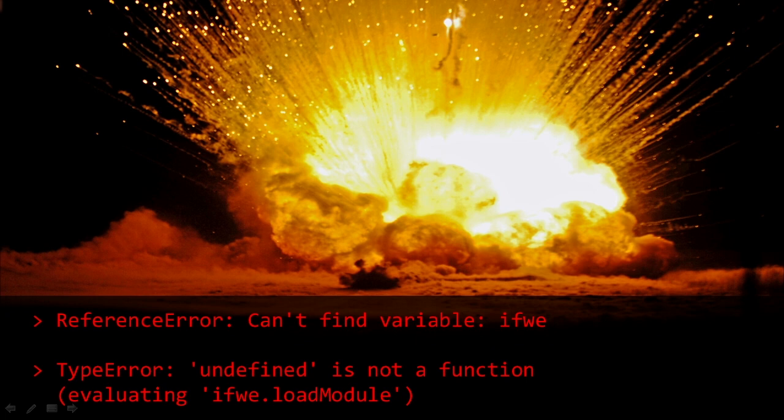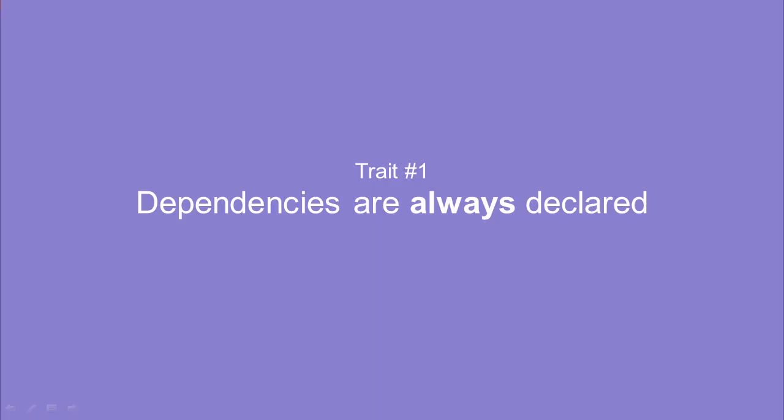So this leads us to our first trait of well-managed JavaScript: dependencies are always declared. It doesn't matter if it's a common library you use everywhere, or it's just a one-time script — always declare your dependencies. It saves you a lot of headache in the future.